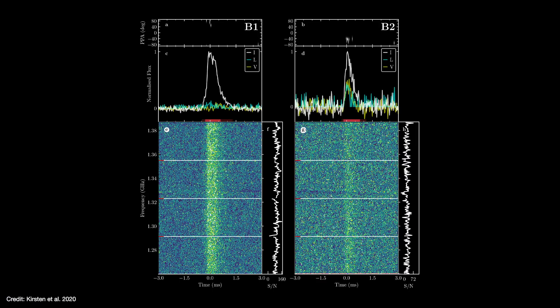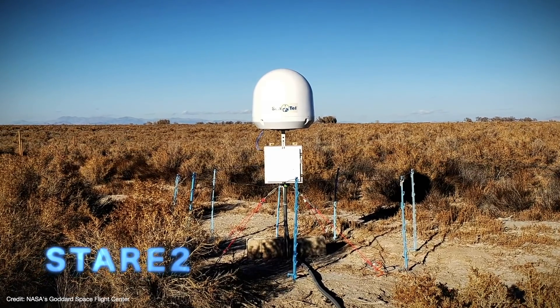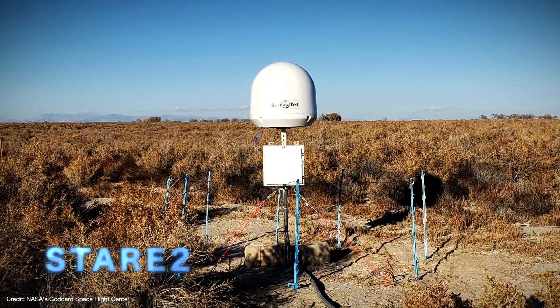13 hours later, SGR1935 underwent a second outburst. But this second outburst had a powerful radio component as well. The radio burst was picked up by CHIME and by Caltech's Survey for Transient Astronomical Radio Emission 2 or STARE 2 detector. So this was the first ever bonafide fast radio burst detected in our galaxy. And we got the X-ray data as well.